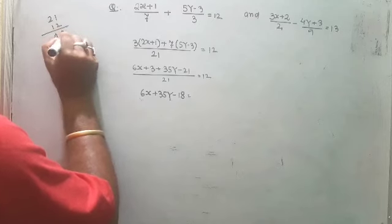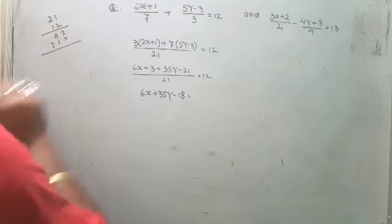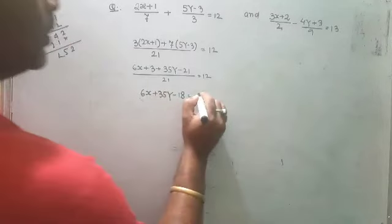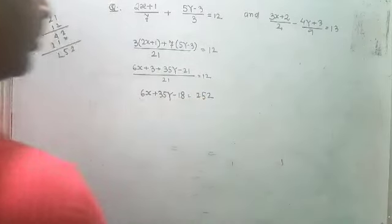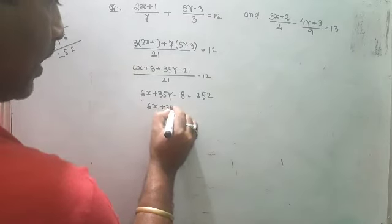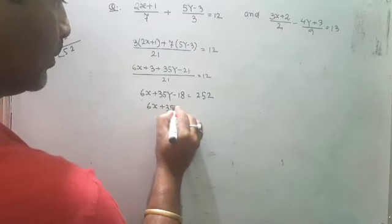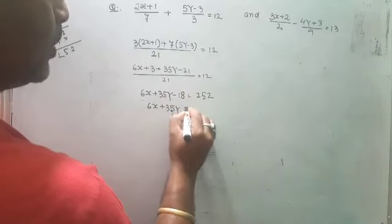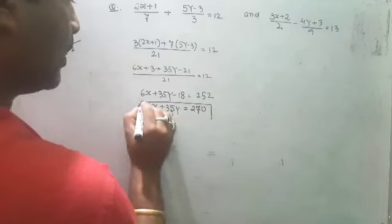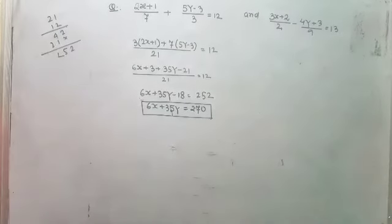21 times 12 is 252. So 6x plus 35y minus 18 equals 252. Moving minus 18 to the right: 6x plus 35y is equal to 252 plus 18, which is 270. This is equation one: 6x plus 35y is equal to 270.